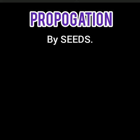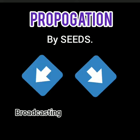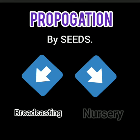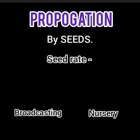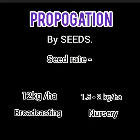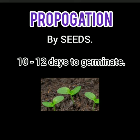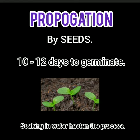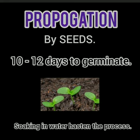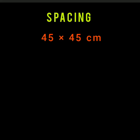For propagation, seeds are used. You can either directly sow by broadcasting or line sowing, or raise a nursery and then transplant. For transplanting, only 1.5 to 2 kg of seed per hectare is sufficient, whereas around 12 kg is required for direct sowing. Seeds generally take 10 to 12 days to germinate; soaking seeds one day prior to sowing hastens germination by three to four days. Based on studies conducted in northern India, the ideal sowing time is the third week of October to the first week of November. Spacing can be 45×40 cm, 45×60 cm, or 60×45 cm.